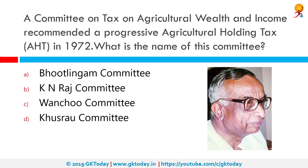A committee on tax on agricultural wealth and income recommended a progressive agriculture holding tax in 1972. What is the name of this committee? Correct answer is the K. Indraj Committee. The central government appointed this committee on taxation of agricultural wealth and income under the chairmanship of Dr. K. Indraj in February 1972, to examine the question of taxation of agricultural wealth and income from all aspects. The Raj Committee submitted its report in October 1972.